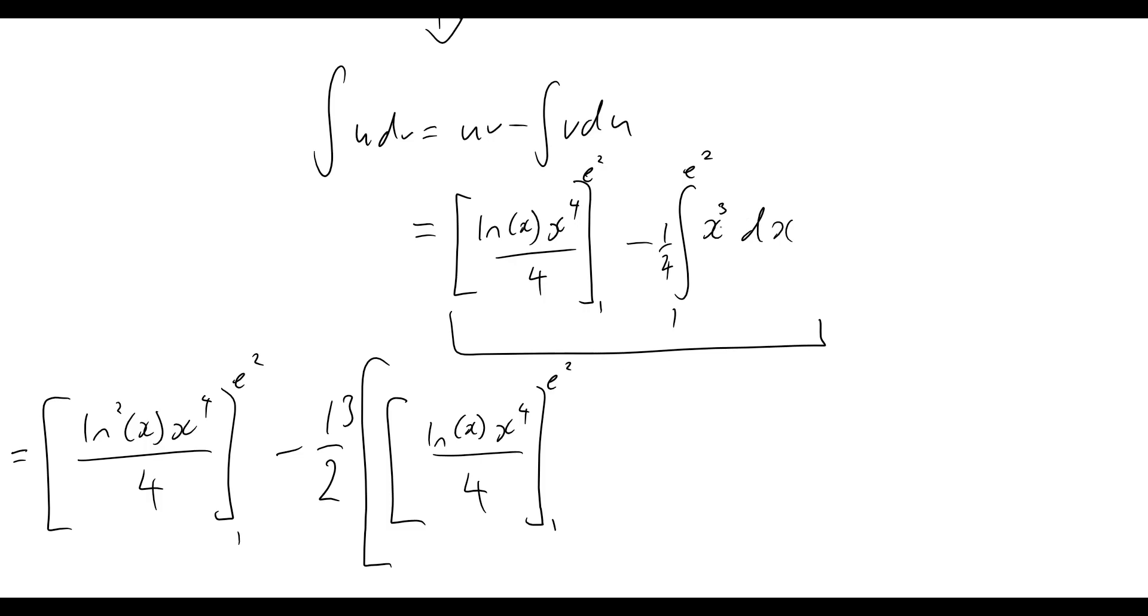And really quick, I think we can quickly integrate this. So that'll just simply become x to the 4 over 4, or simply we can then write this out as minus 1 on 16, since we'll bring that 4 out the front, times by x to the 4 evaluated from 1 to e squared. Yet again, now we can close that bracket off.